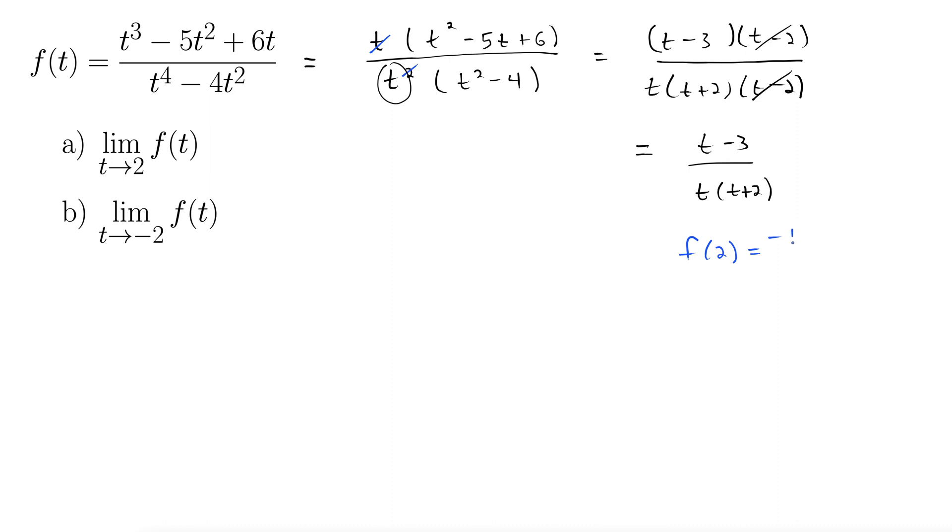2 minus 3 is negative 1 up here and then 2 times 4, so that gives us negative 1 eighth. So that limit was nice. We didn't have to do anything too crazy. We just plug it in and we get negative 1 eighth, done.